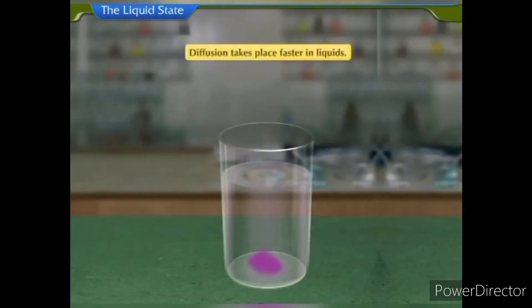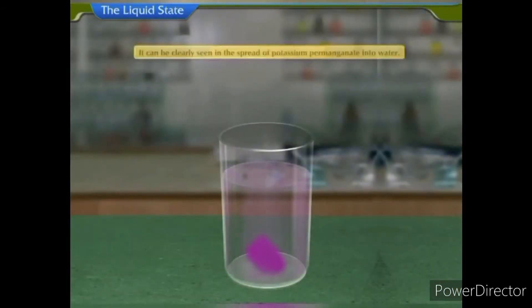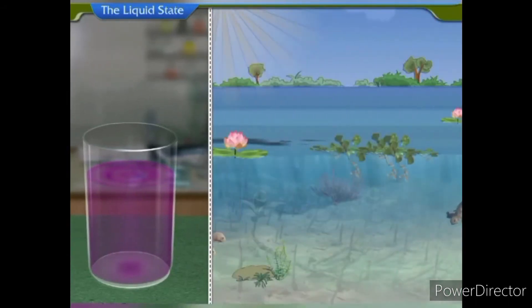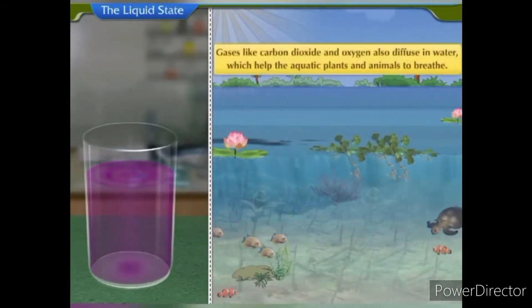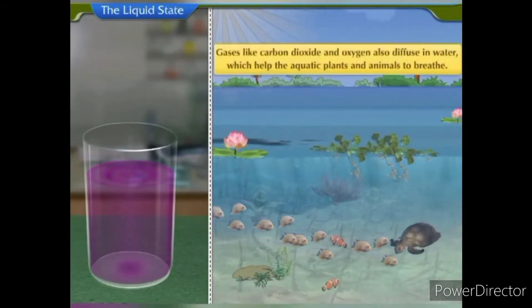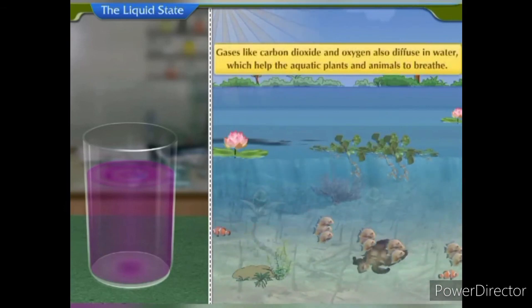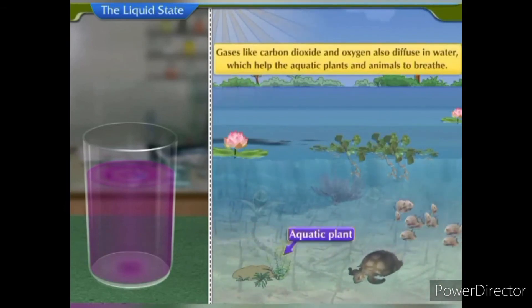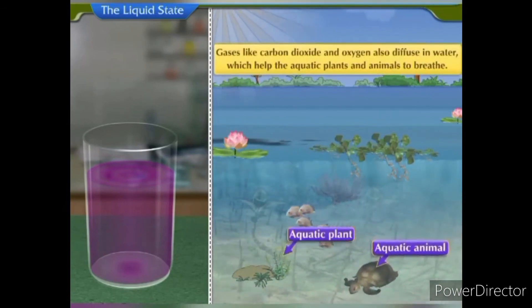Diffusion takes place faster in liquids. It can be clearly seen in the spread of potassium permanganate into water. Also, gases like carbon dioxide and oxygen also diffuse in water, which helps the aquatic plants and animals to breathe.